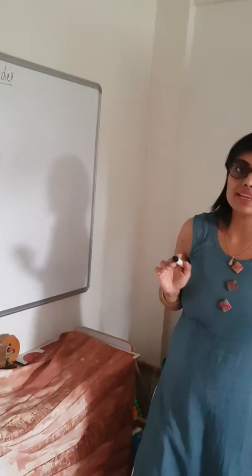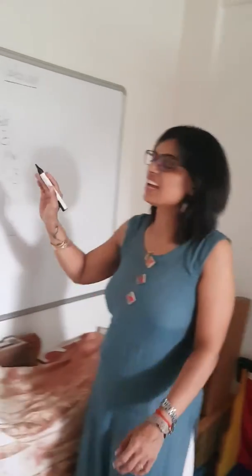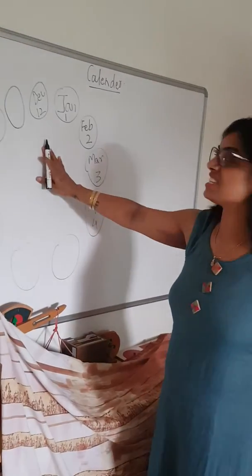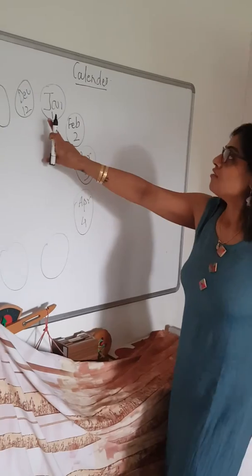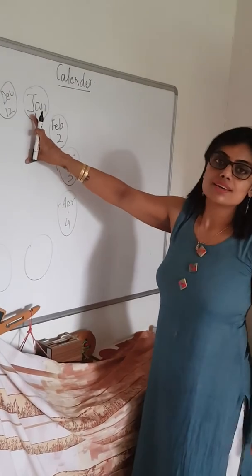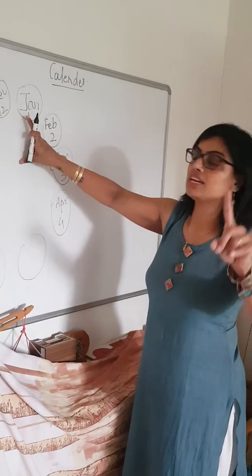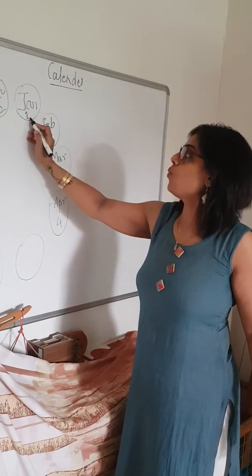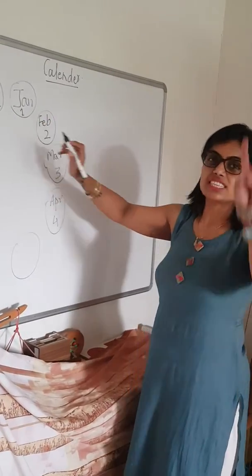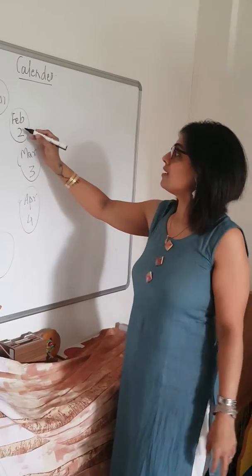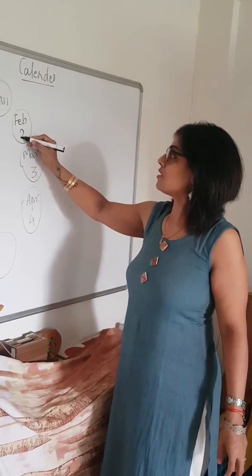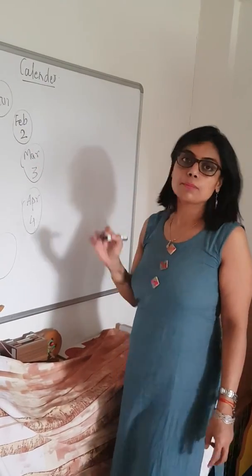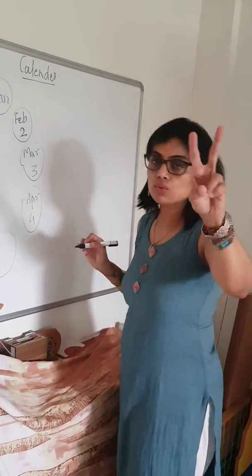Now what you have to do is every day take the kid to this board and say: 1st month — January. January ka number? 1. 2nd month — February. February ka number? 2.